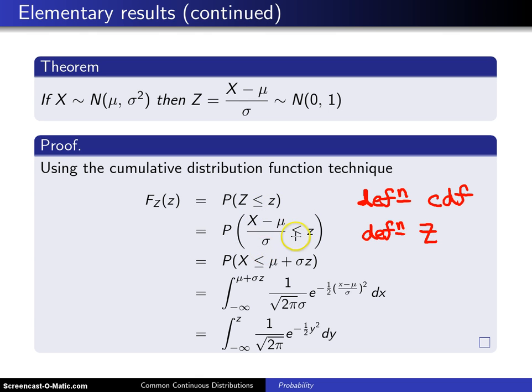Now, within this inequality here, if you multiply by the constant positive value sigma, and then you add mu to both sides of this inequality, you get the probability x is less than or equal to mu plus sigma z. So that is true by a little bit of algebra that is performed on the inequality.